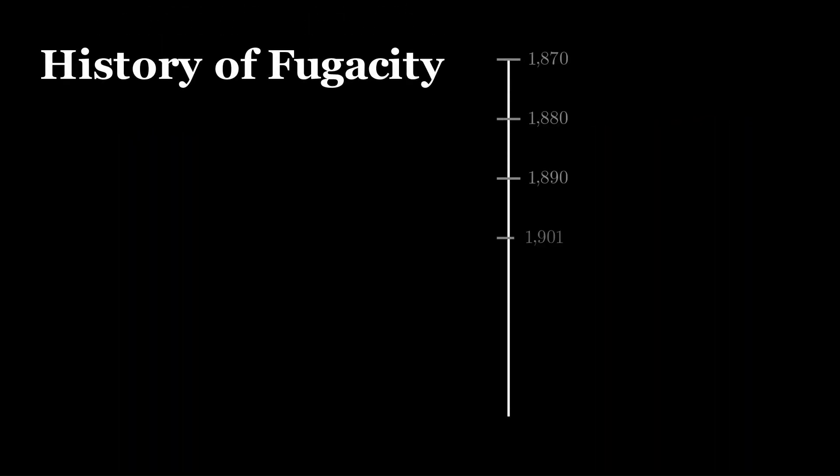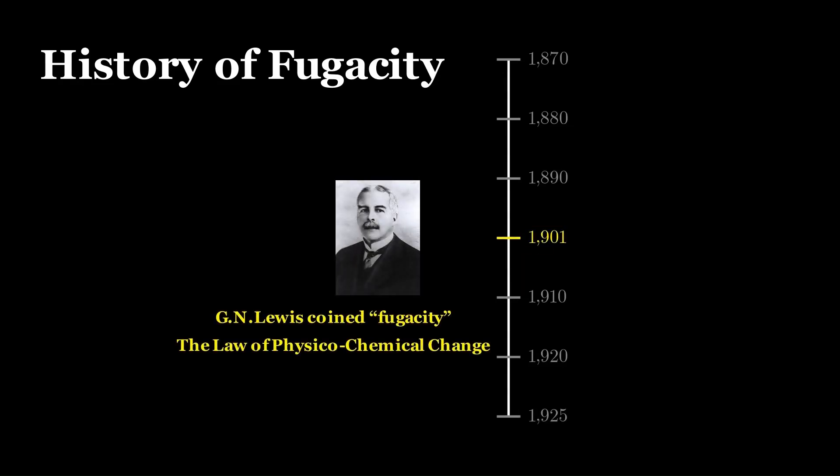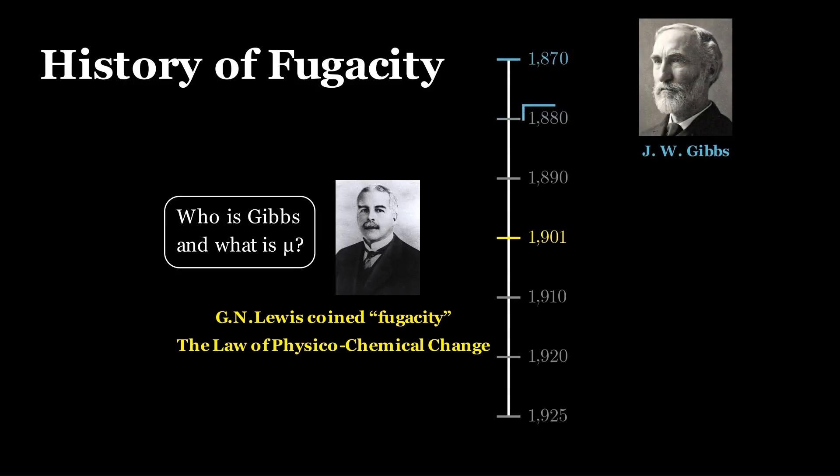Let's start by diving into the history of the term. In 1901, G.N. Lewis, the eminent American chemist, coined fugacity in his landmark paper the law of physico-chemical change. Remarkably, in that paper he made no direct reference to Gibbs' work on chemical potential, despite it being an influence for fugacity and published about 25 years ago.